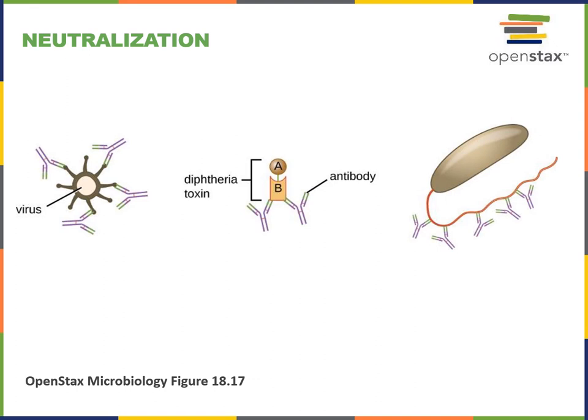On the right we see an example of antibodies binding to the flagellum of a bacterium. By binding to that flagellum, the antibodies are preventing the bacteria from being able to move efficiently through the body, slowing the spread of the infection.